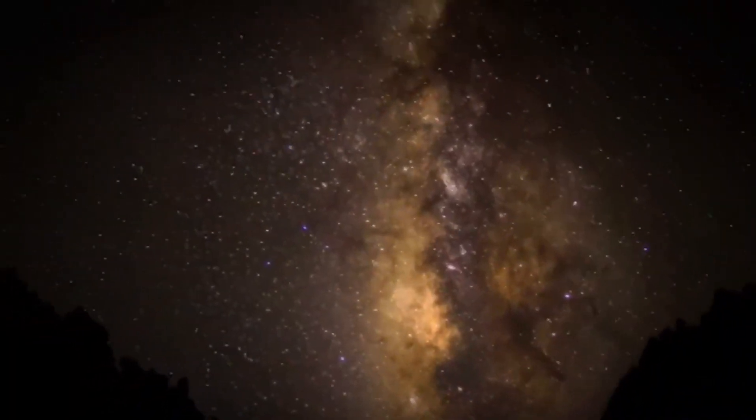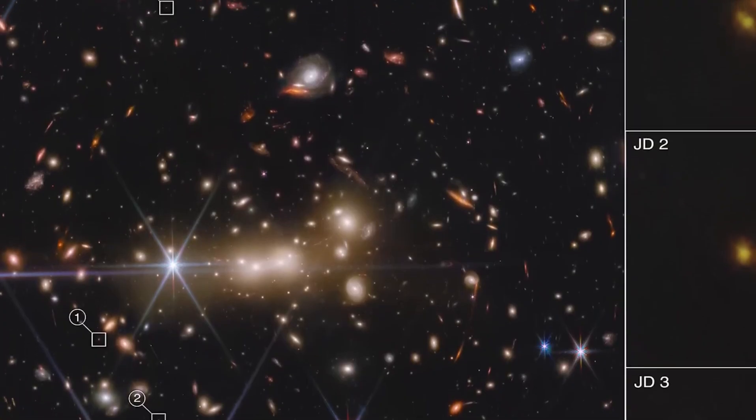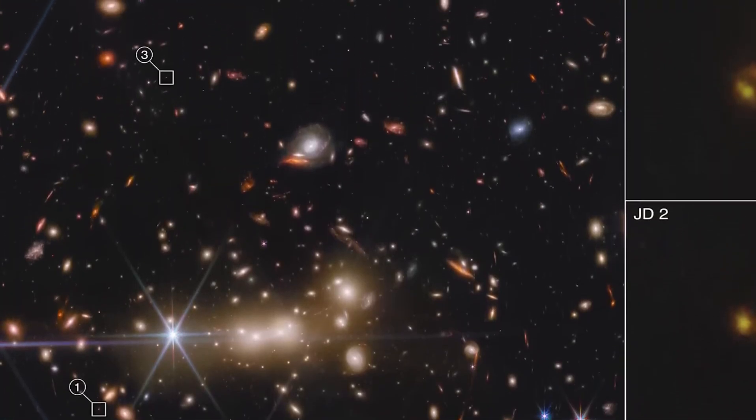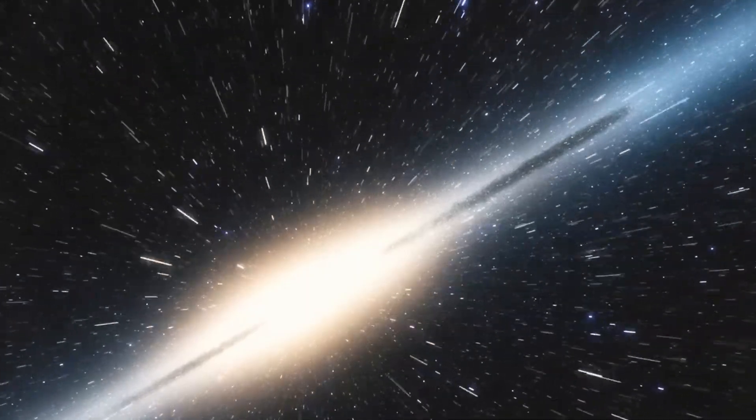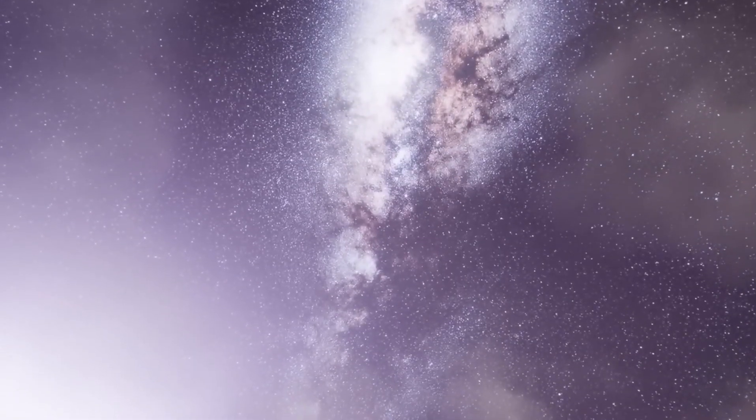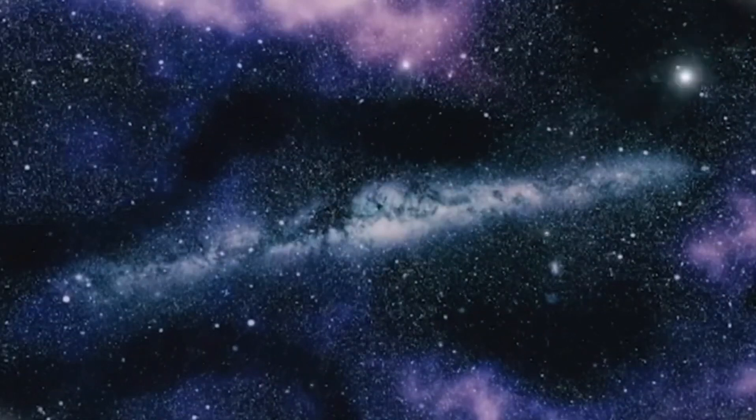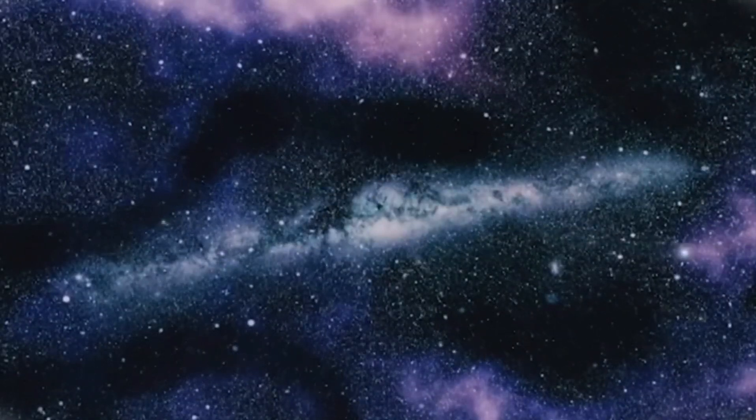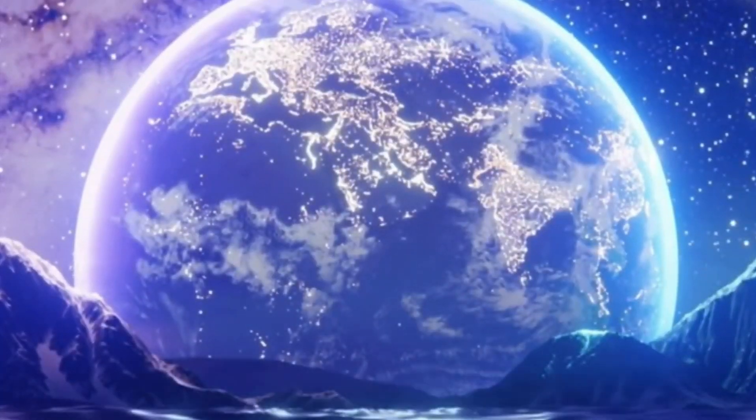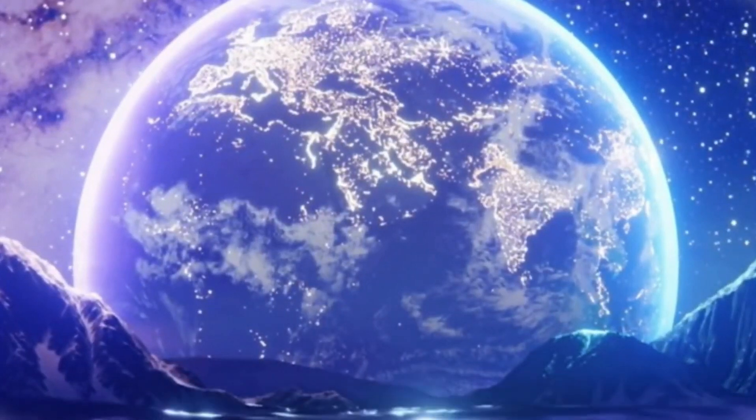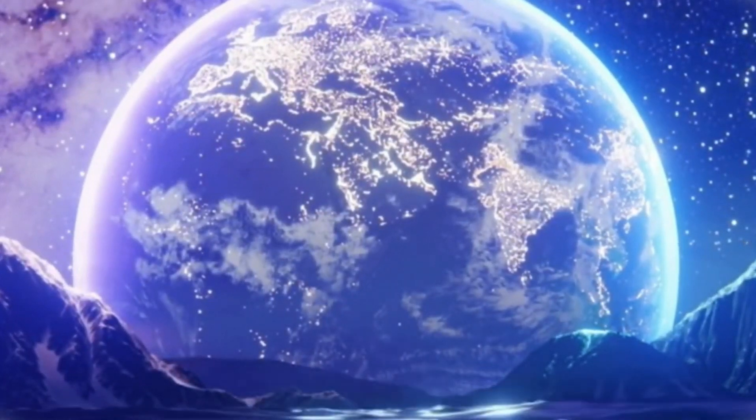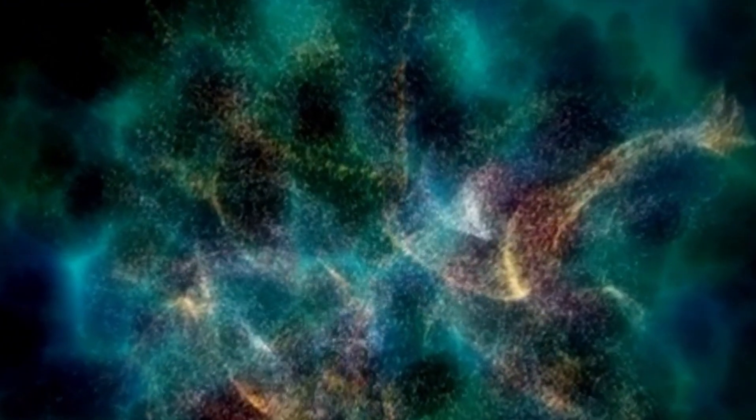Then came along James Webb, the new space telescope from NASA, the Canadian Space Agency, and the European ESA, which began operation in summer 2022. Even the first images from the telescope provided explosive material that still sparks heated discussions among scientists today. To be exact, there are six galaxies that supposedly existed at the beginning of time, for which there is no scientific explanation.